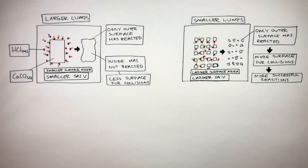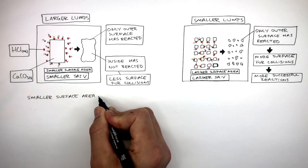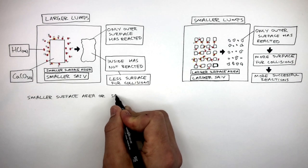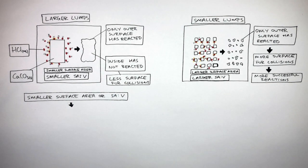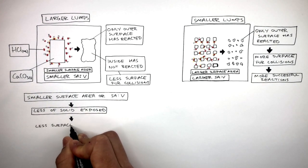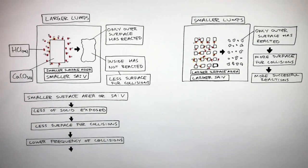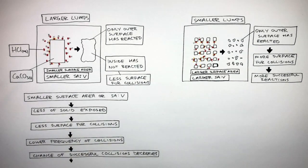Let's now go through the specific language you'll need to explain how surface area affects the rate of reaction. Larger lumps have a smaller surface area, or a smaller surface area to volume ratio. This means there is less of the solid exposed, so there is less surface for collisions. This lowers the frequency of collisions, so the chance of successful collisions decreases. Overall, this lowers the rate of reaction.